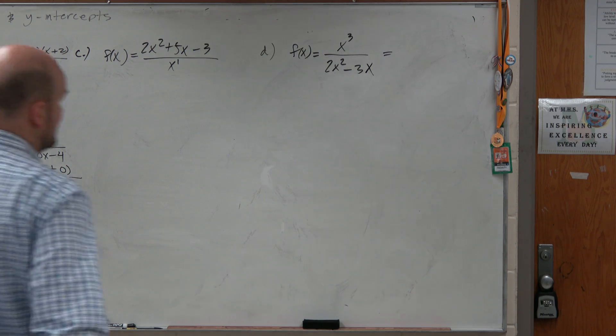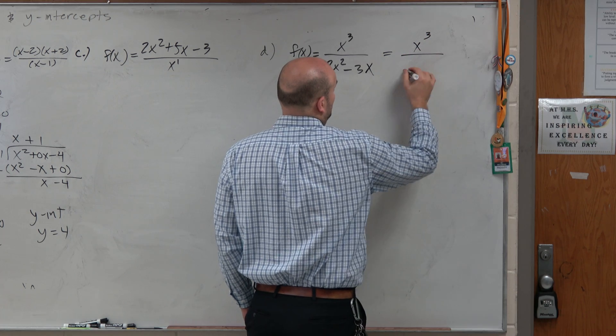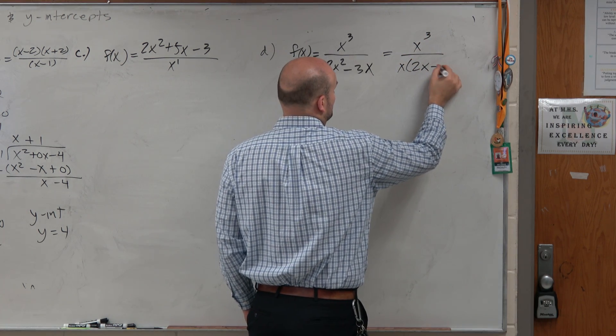So first thing we want to do in this case is factor anything, simplify anything we can. And when we factor out an x, we're left with a 2x minus 3.